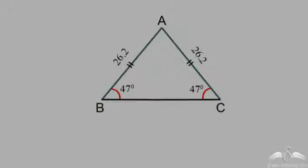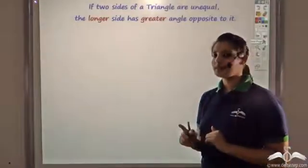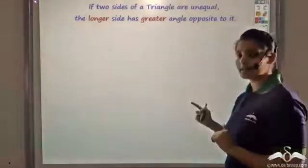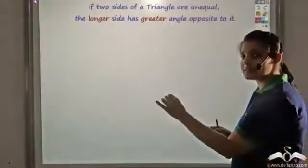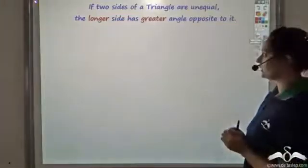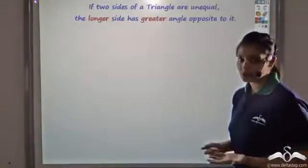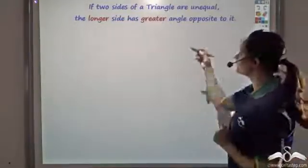Now, what if these sides are not equal? If these sides are not equal, then the greater side — the longer side — has a greater angle opposite to it. Let us try to prove this now.